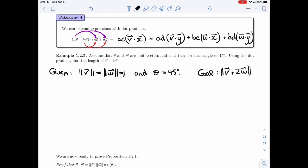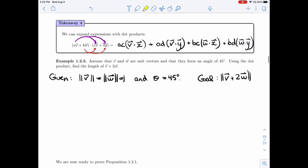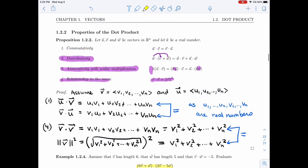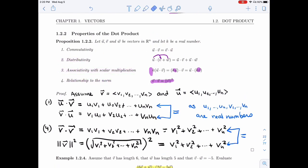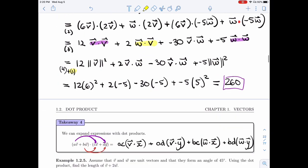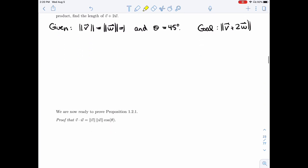Now, what's really nice about the dot product is it relates nicely to the norm. I'm going to use this fourth property here. If I want to get to the norm, I can actually use a dot product. So now I want to get the length of V plus 2W.